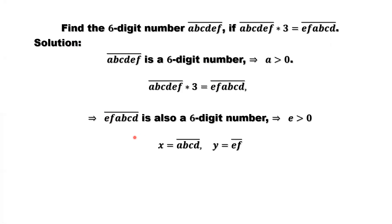We define a new number. X equals abcd. Y equals ef. X is the first part abcd of the original number. Y is the last two digits of the original number. So here, we are trying to find X and Y, then put them together to form a six-digit number.